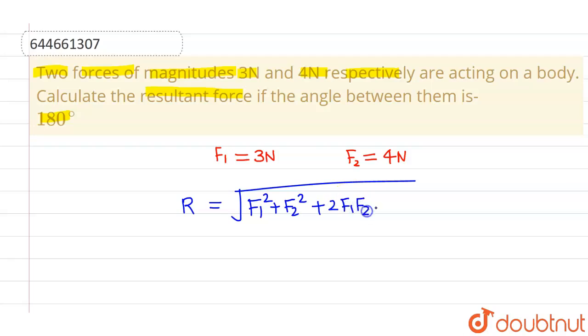is 180 degrees, so this will be cos 180 degrees. Now, we know that the value of cos 180 degrees is minus one, so this becomes F1 square plus F2 square minus 2 F1 F2.